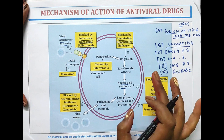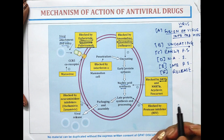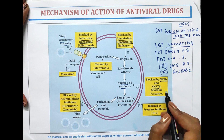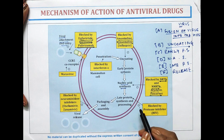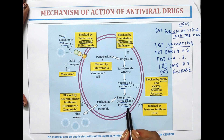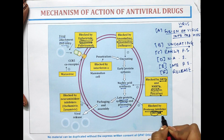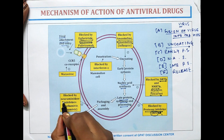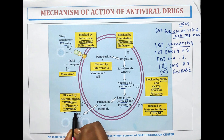NRTIs and NNRTIs — non-nucleoside reverse transcriptase inhibitors — along with acyclovir and foscarnet act on nucleic acid synthesis. The drugs acting on late protein synthesis and processing are protease inhibitors, used for HIV generally. Viral release is inhibited by neuraminidase inhibitors such as oseltamivir and zanamivir.